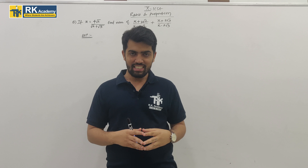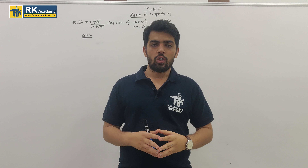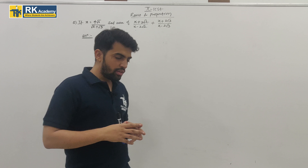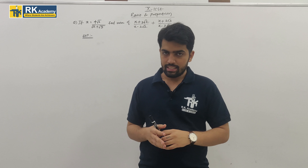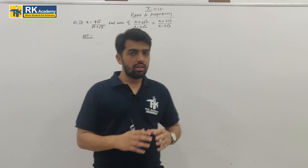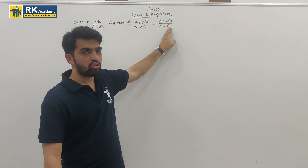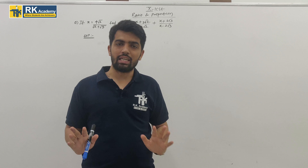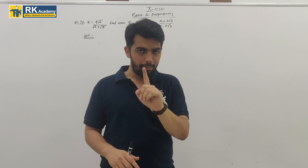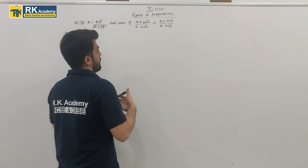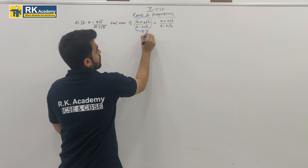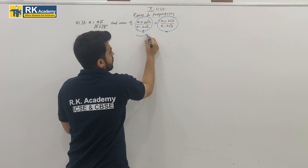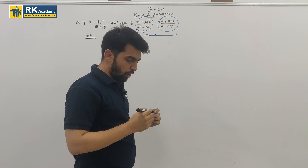Hello everyone, welcome to my class of 10th ICSE. Today we are going to solve a problem from ratio and proportion. We are given the value of x, and we have to find the value of this expression. This is a very easy problem and can be solved in three steps. The first step is to find the value of the first term, then the second term, and finally the complete expression by adding them.